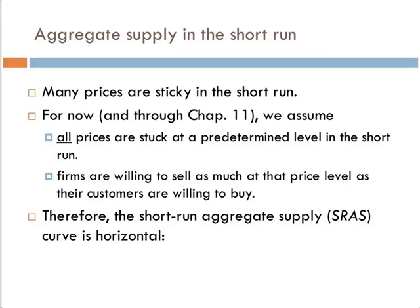When we turn to aggregate supply in the short run, sometimes prices are sticky. In other words, in the short run some changes happen that the economy just doesn't have time to react to. Not all prices can immediately respond to economic changes. Through Chapter 11, we'll assume that all prices are stuck at a predetermined level. Now, does this make sense? Not really. But even though it's kind of a cheesy assumption, it actually gives us a model that has a pretty significant amount of explanatory power — so it's still well worth studying.